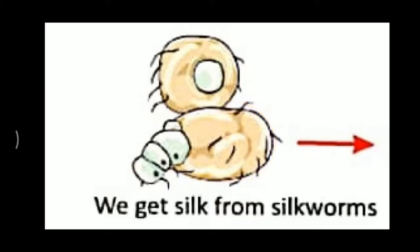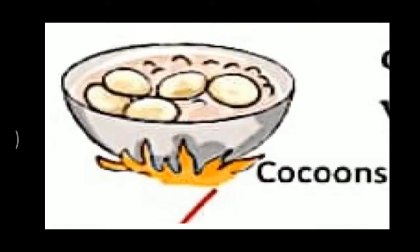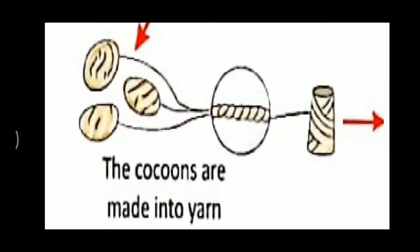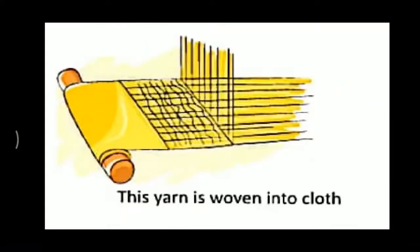We make use of this cocoon for forming silk. These cocoons are boiled and cleaned, and then out of these cocoons we make yarns — a thread-like structure. Out of these threads we weave it into a cloth, and this way we get the silk cloth.